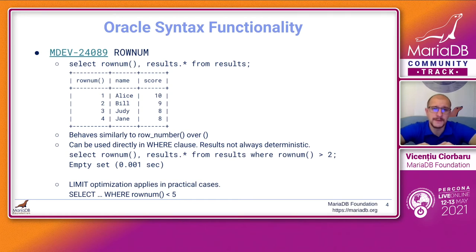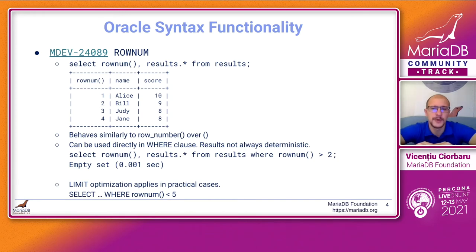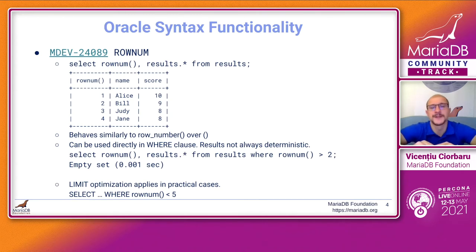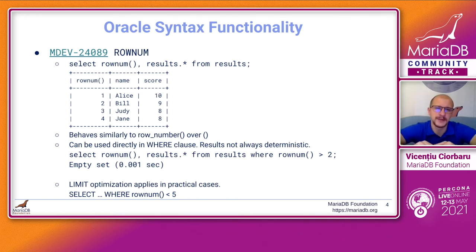The disadvantage of ROWNUM is that the result is not always deterministic. For example, if you run a query with SELECT ROWNUM FROM results and then try to filter with WHERE ROWNUM is greater than two, this will not work — it will return an empty set, because ROWNUM gets incremented for every row accepted, not evaluated. This means ROWNUM will never exceed two because none of the rows will ever be accepted. In that case, you would wrap the whole query in a subquery. But then you might as well use the SQL standard ROW_NUMBER functionality. Nevertheless, this is meant for applications written for Oracle that expect Oracle-like behavior.